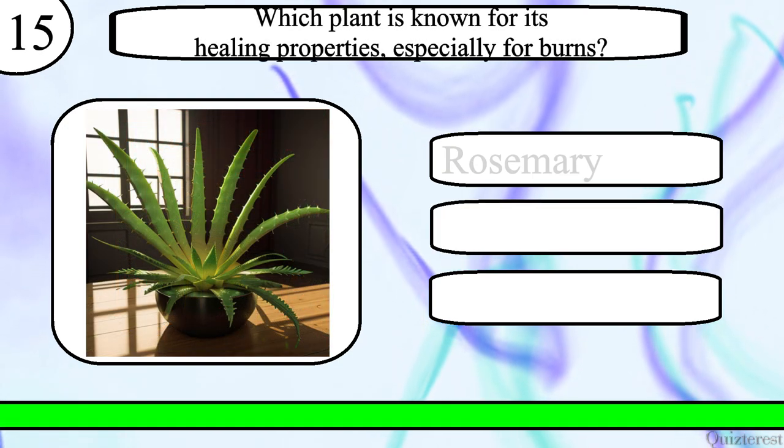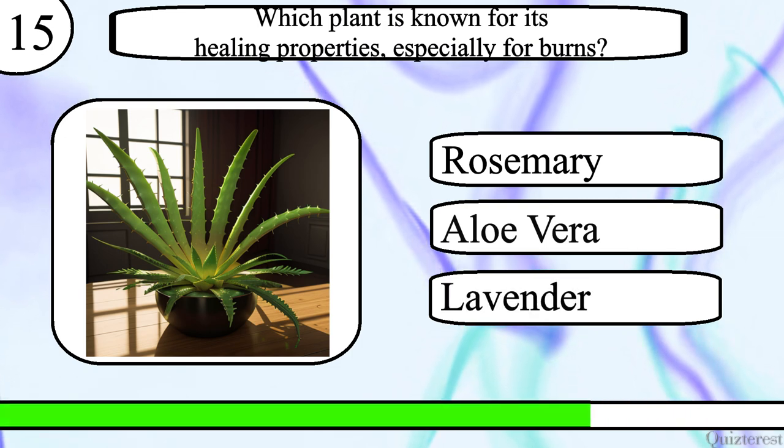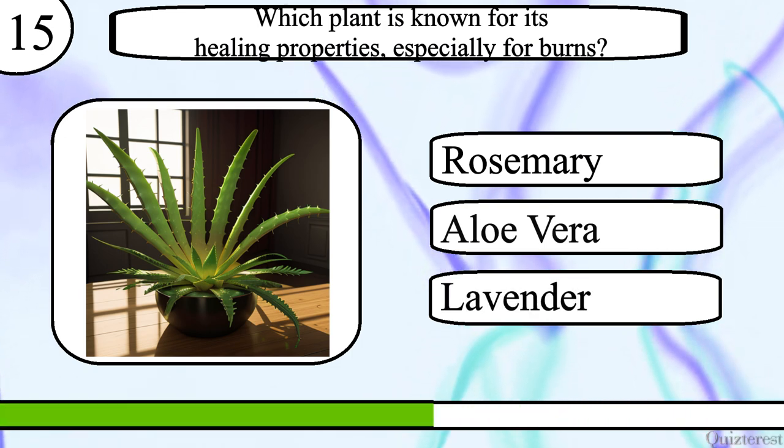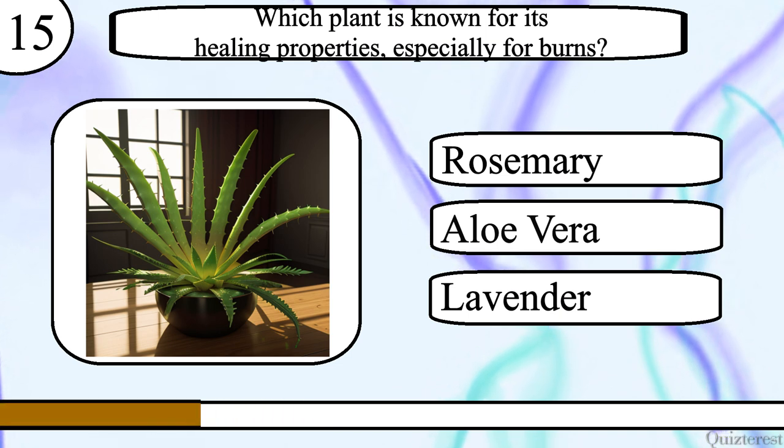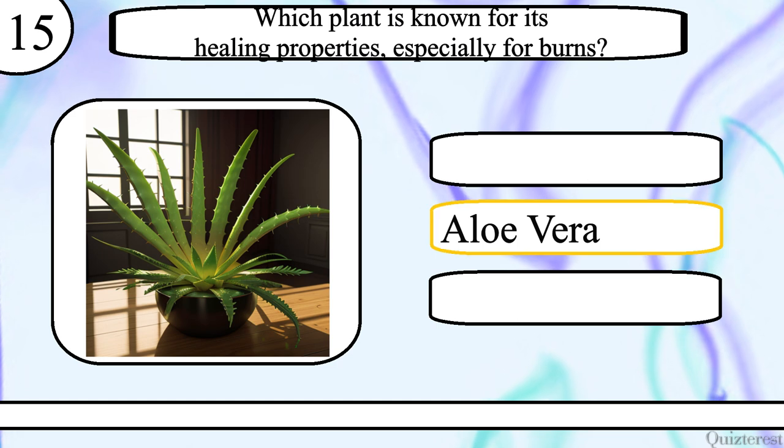Question 15. Which plant is known for its healing properties, especially for burns? Rosemary, aloe vera or lavender? The correct answer is aloe vera.